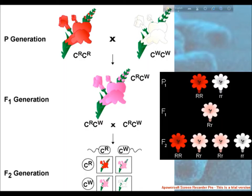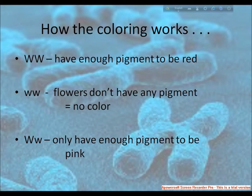In the picture, it shows very clearly. When red and white are crossed, the F1 generation produces all pink flowers. But in the F2 generation, it produces 1 red, 2 pink, and 1 white flowers. The red flowers have enough pigment to be red, the white flowers don't have any pigment, and the pink flowers only have enough pigment to be pink. This is how the coloring works.